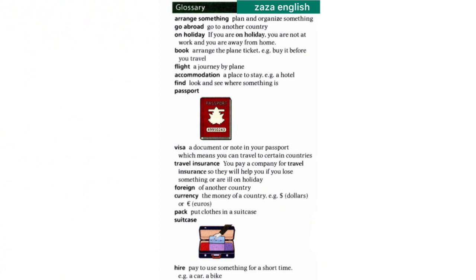Foreign: of another country. Currency: the money of a country, like dollars or euros. Pack: put clothes in a suitcase — and you have the picture of a suitcase too. Hire: pay to use something for a short time, like a car or bike.